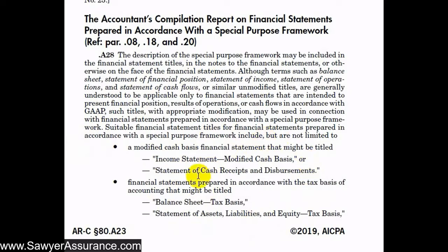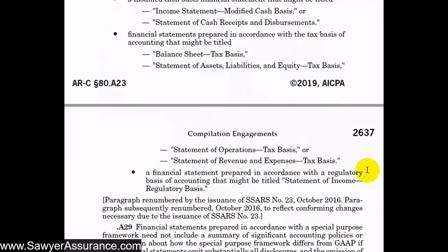For example, an income statement prepared on a modified cash basis might be titled 'Income Statement - Modified Cash Basis' or 'Statement of Cash Receipts and Disbursements.' A tax basis balance sheet might use a similarly modified title, and a tax basis statement of operations might be titled 'Statement of Operations - Tax Basis' or 'Statement of Revenue and Expenses - Tax Basis.' A regulatory basis of accounting might also be used for a statement of income with a similarly modified title. The key is ensuring it is clear that a special purpose framework was used.